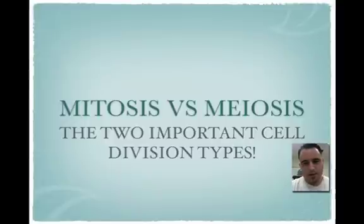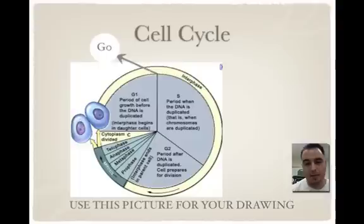All right, students, mitosis versus meiosis — the two important cell division types. Let's take a look at the cell cycle.